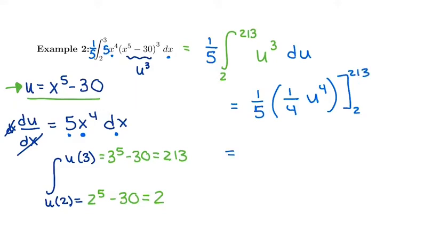So what I have really out front is 1/5th times 1/4th. 1 times 1 is 1 over 5 times 4 is 20. I could write 1/20.